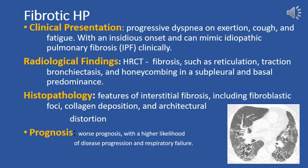Histopathologically, fibrotic hypersensitivity pneumonitis exhibits features of interstitial fibrosis, including fibroblastic foci, collagen deposition, and architectural distortion. Prognosis is generally worse compared to non-fibrotic hypersensitivity pneumonitis, with a higher likelihood of disease progression and respiratory failure.